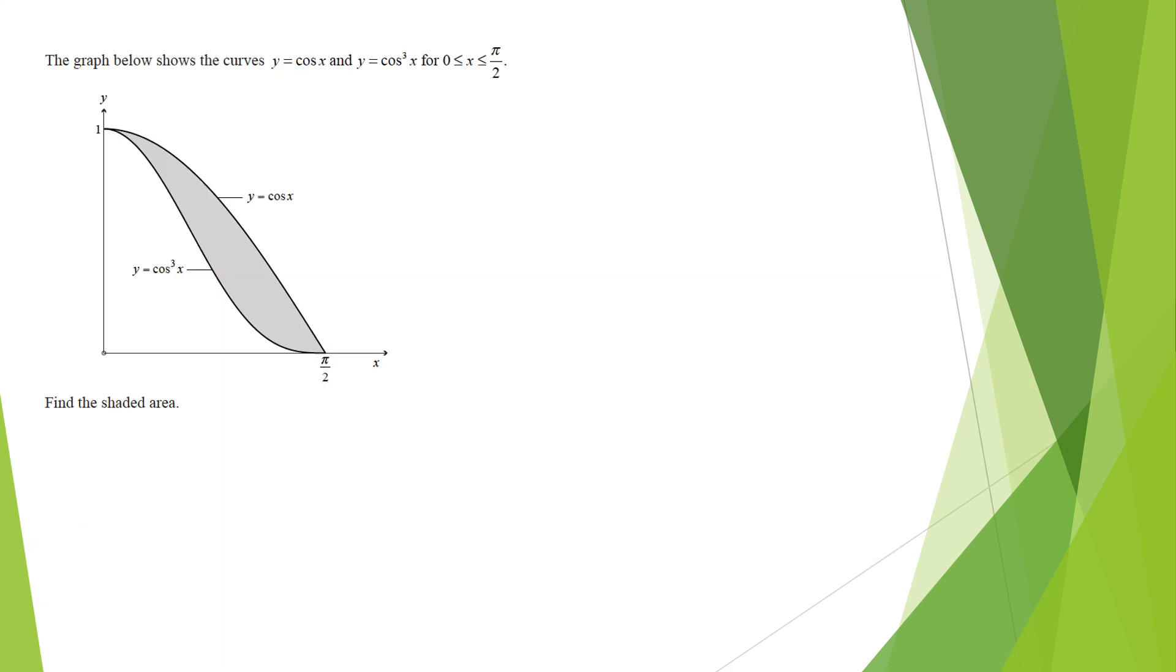This is an excellence level question, area between two curves. It's excellence level because the integration involves trig identities. The integration is not as straightforward. But the area itself, how to go about it, is the same as achieved and merit questions. First, identify your lower boundary and upper boundary.